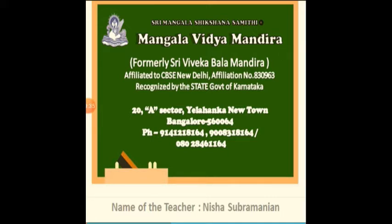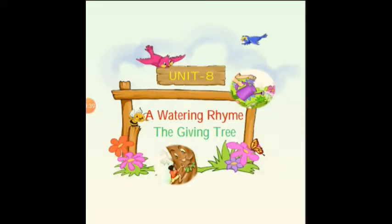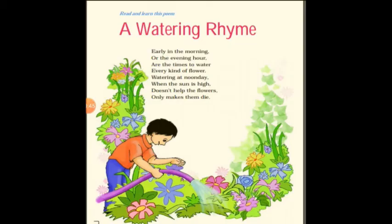Please open page number 114 in your Marigold textbook. The poem we are reading today is called 'A Watering Rhyme.' Before starting the poem, I just wanted to tell you that this poem is purely related to nature. I would like to ask you a few things — do you have plants in your garden or nearby your house? What kind of plants have you grown in your garden or terrace?